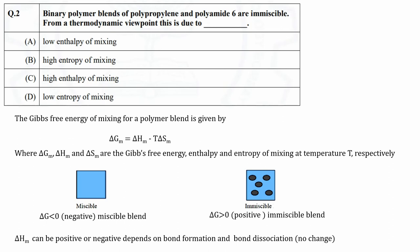When entropy is high, ΔG becomes negative because T multiplied by ΔS becomes bigger than ΔH. When ΔG is negative, polymers mix together and form compatible blend. Since we know polypropylene and polyamide blend is immiscible, the correct answer is option D, low entropy. In this case ΔG will be positive.